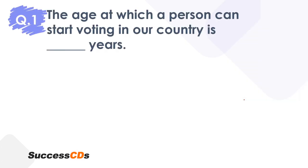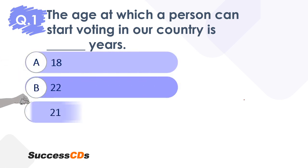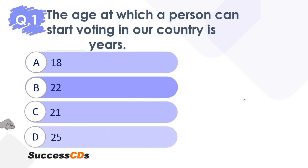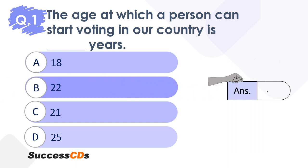Coming to the first question. The age at which a person can start voting in our country is dash years. What is the minimum age requirement that enables you to vote? Your options are 18, 22, 21, or 25. Your time begins now. It's a timer of 10 seconds. You have to tell me the age that allows you to vote, after which you can vote.